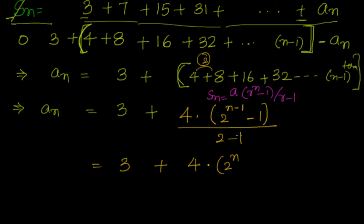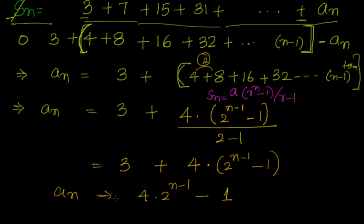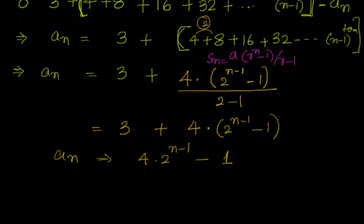Simplifying: aₙ = 3 + 4·(2ⁿ⁻¹ − 1) = 4·2ⁿ⁻¹ + 3 − 4 = 4·2ⁿ⁻¹ − 1.